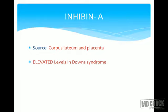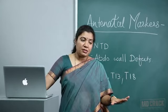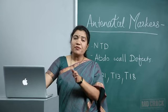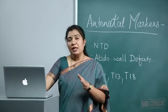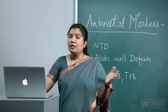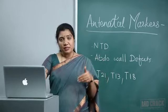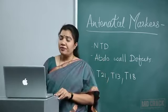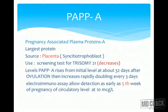Inhibin A, sourced from the corpus luteum and placenta, is found to be raised in Down syndrome. Studies comparing normal pregnancies with Down syndrome pregnancies have shown that inhibin A levels are elevated in pregnancies affected by Down syndrome.